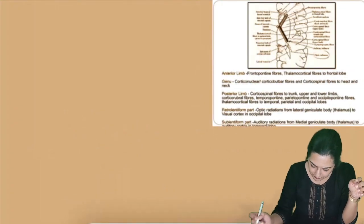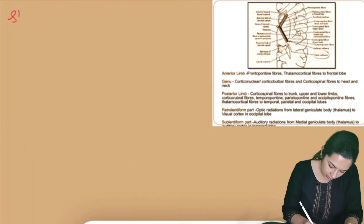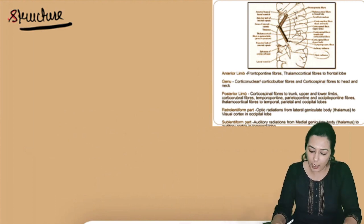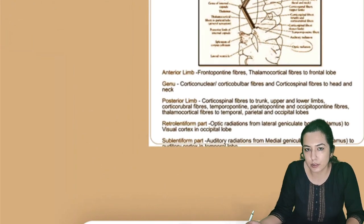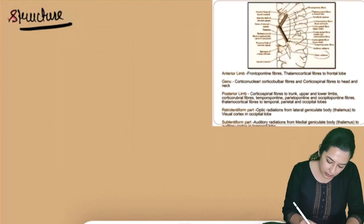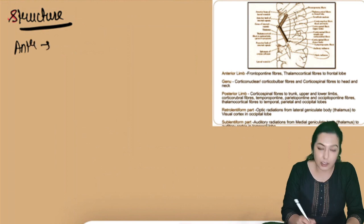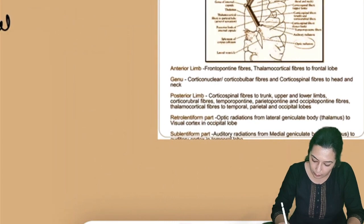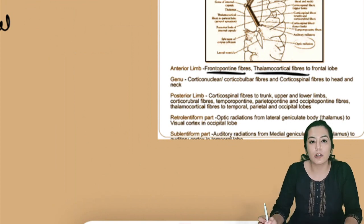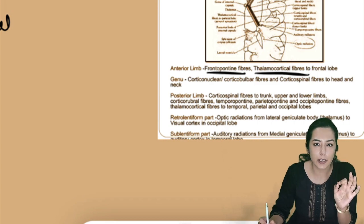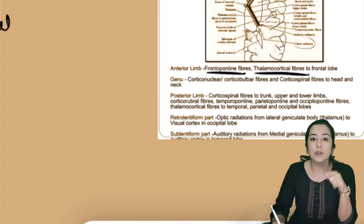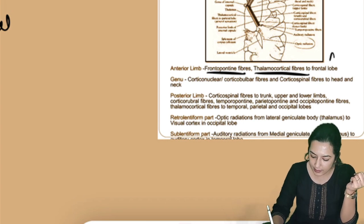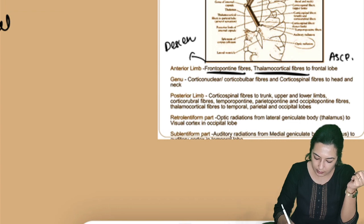Now we need to understand the fibers, which are important clinically to determine which area of the internal capsule is affected. The anterior limb connects fibers of the frontal lobe. It contains frontopontine fibers, which are descending, and thalamocortical fibers, which are ascending sensory fibers going from the thalamus to the sensory cortex.